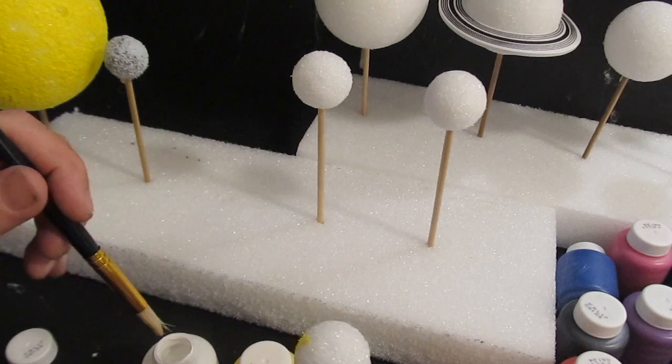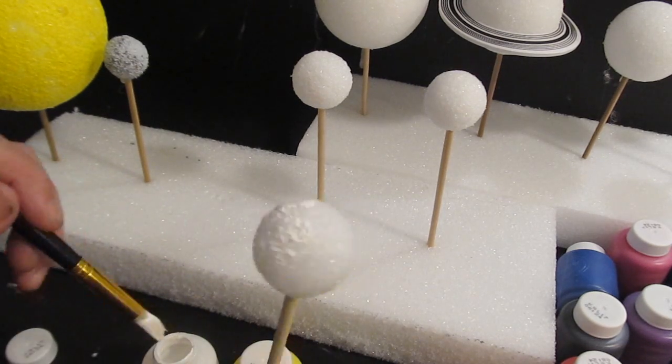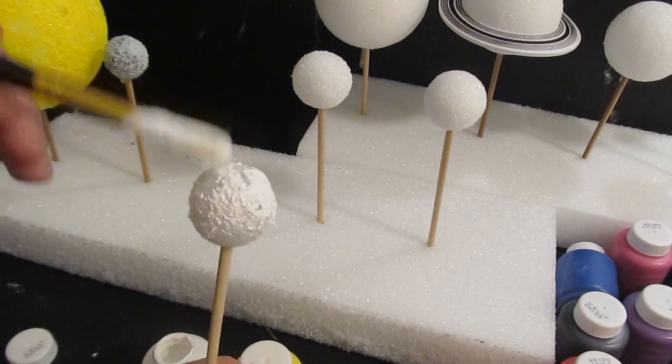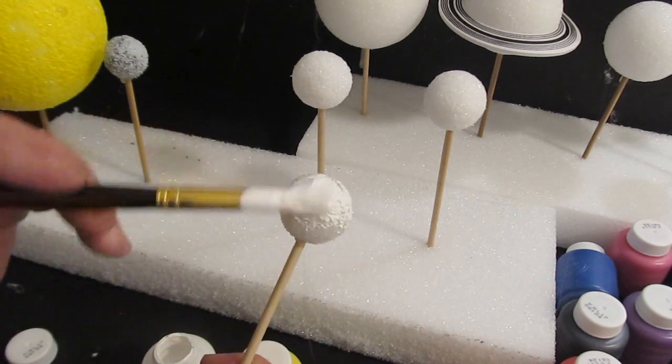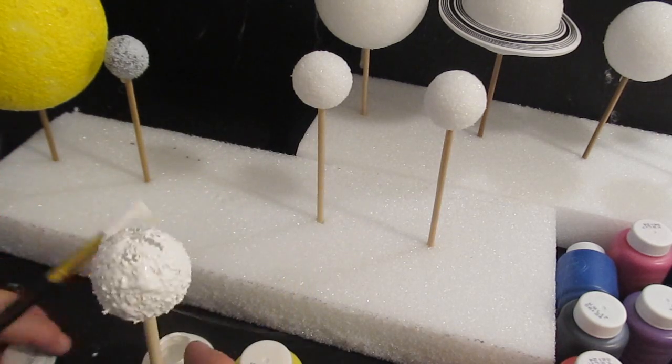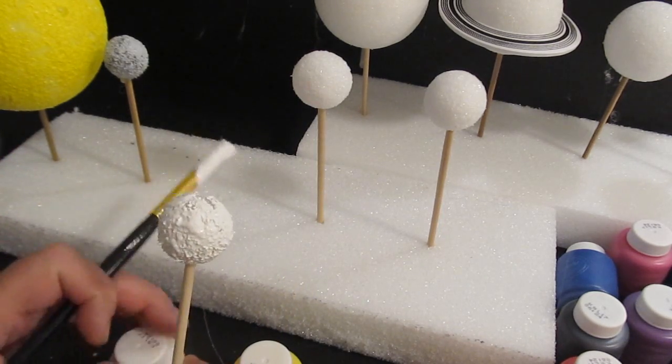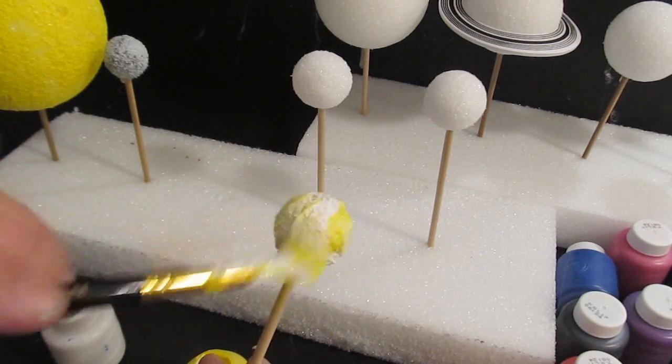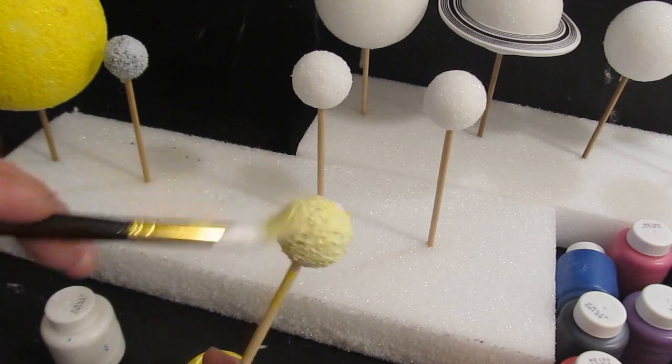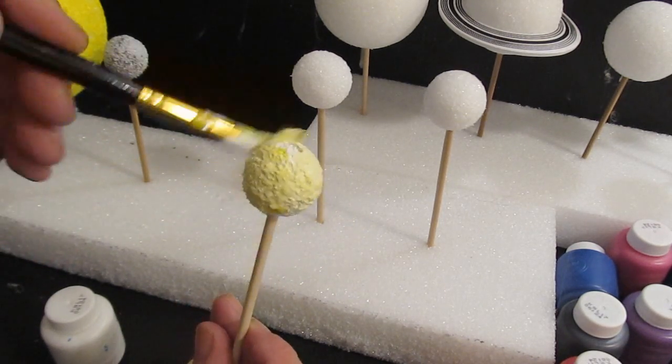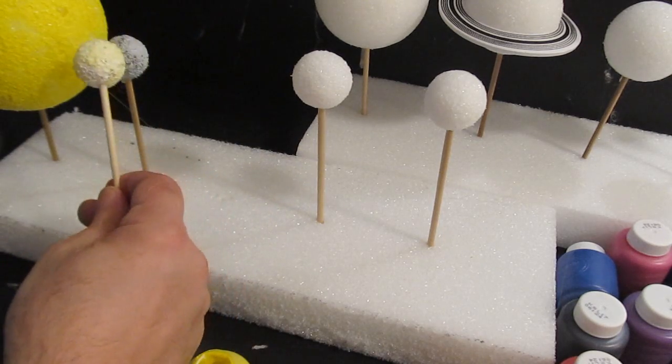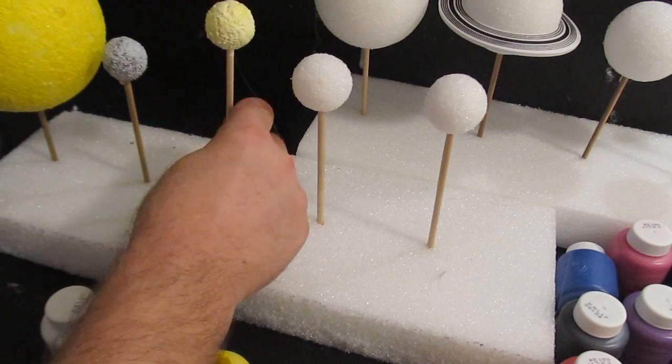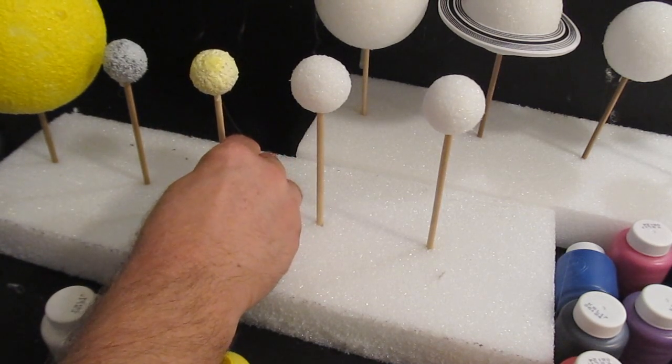Now Venus. I started with white. Like this. Paint the whole thing white. And then add a little yellow. Because it's a cloud covered planet. Covered in toxic clouds. It's the hottest planet in the solar system. Even though it isn't the closest. Greenhouse effect.